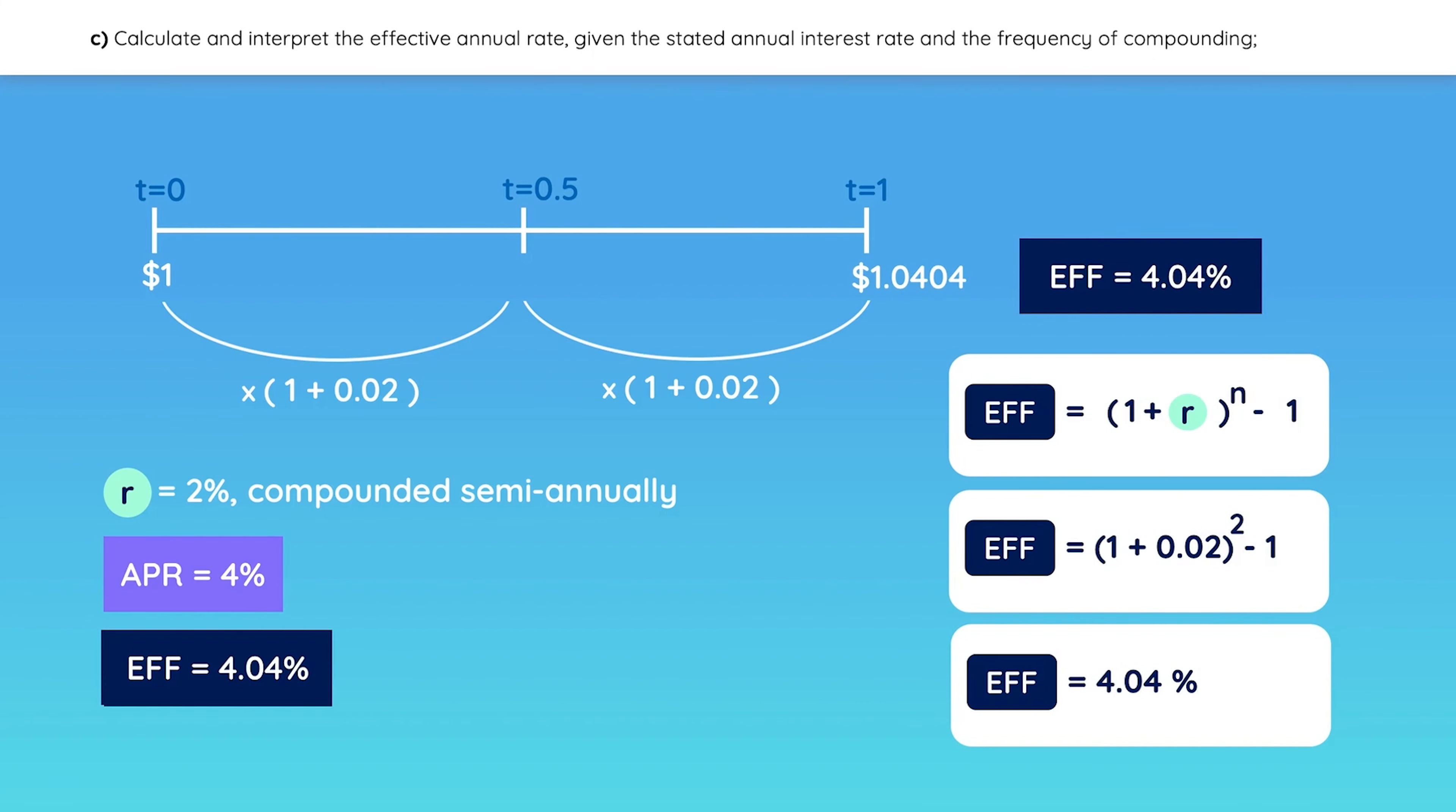The reason why the APR is smaller than the effective rate is because the APR uses simple interest, while the effective rate takes compounding into account.